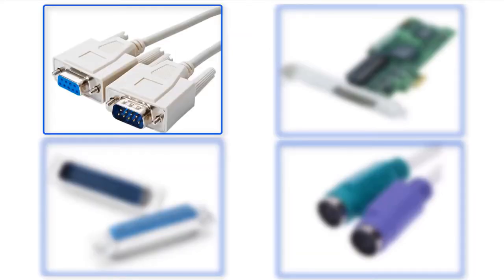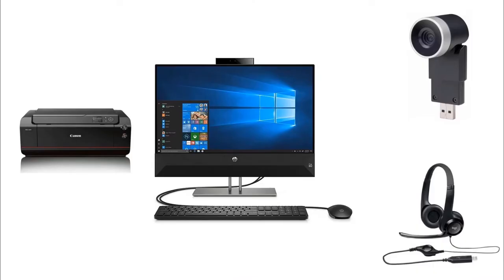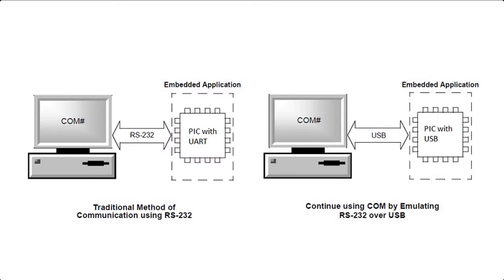The RS-232 serial interface port or COM port is now rarely found on a personal computer. This once common interface has been virtually replaced by USB. Today USB has grown beyond PCs to become the common interface for many embedded, industrial and consumer products like cameras, GPS, printers and many more. This has created problems because many PC software were designed to communicate with embedded applications using the RS-232 interface, as USART is still one of the simplest serial protocols to use with any microcontroller.